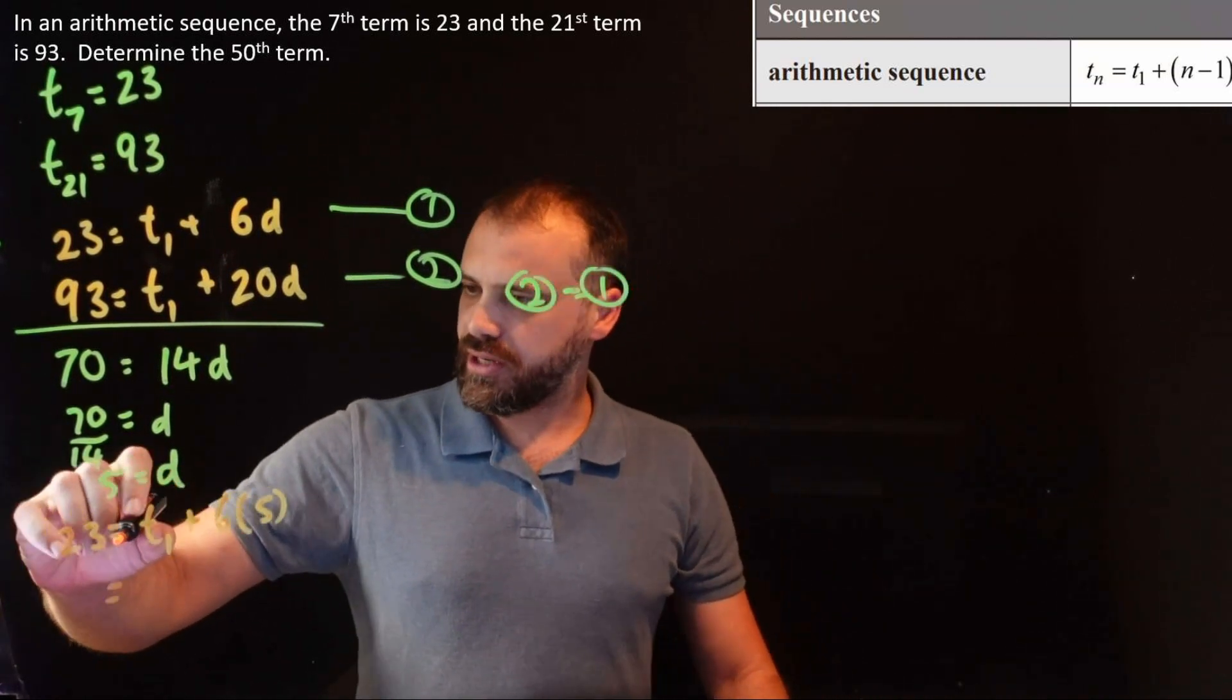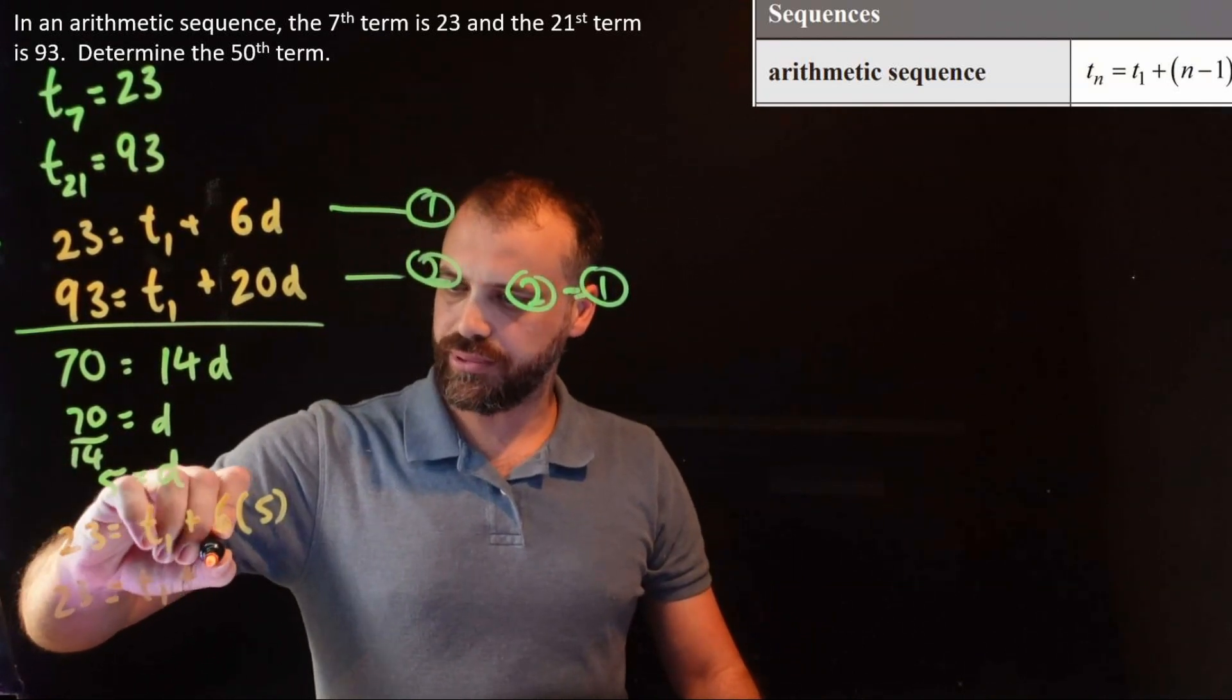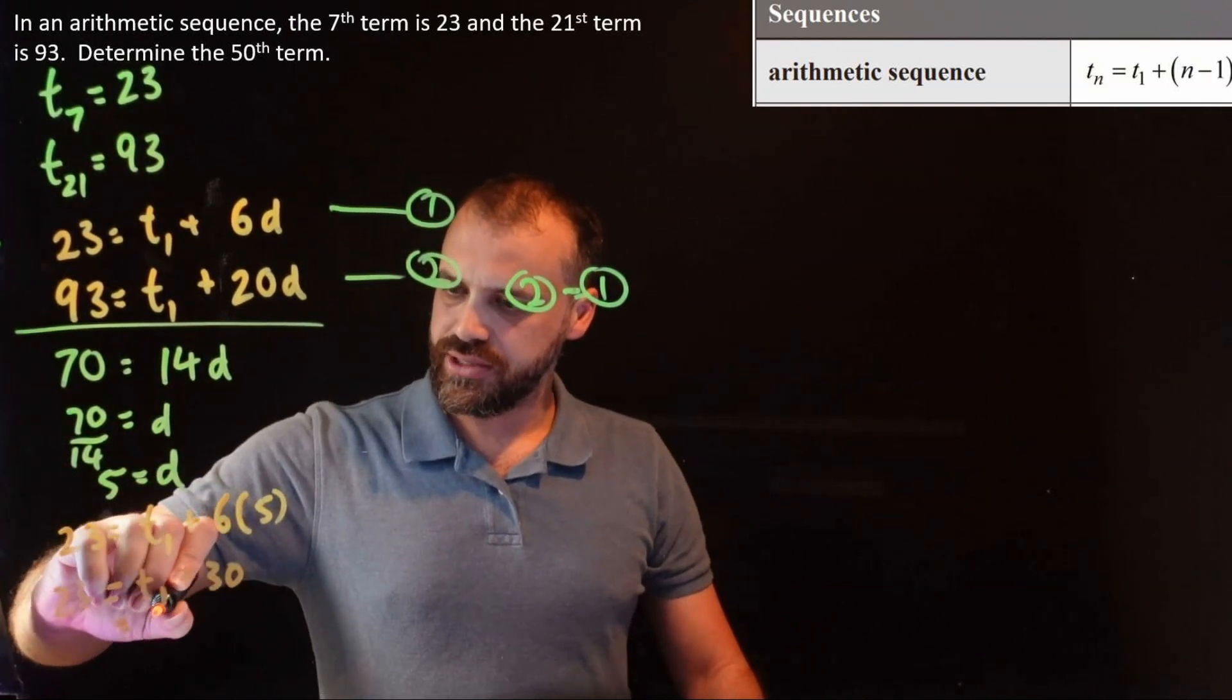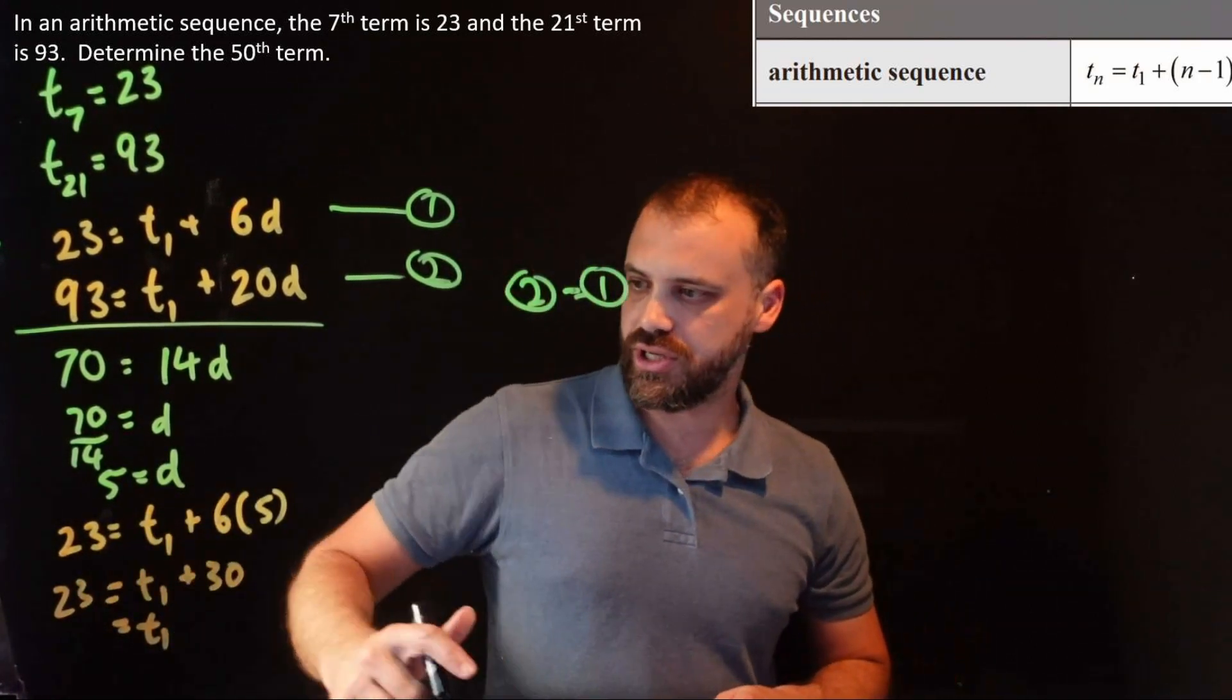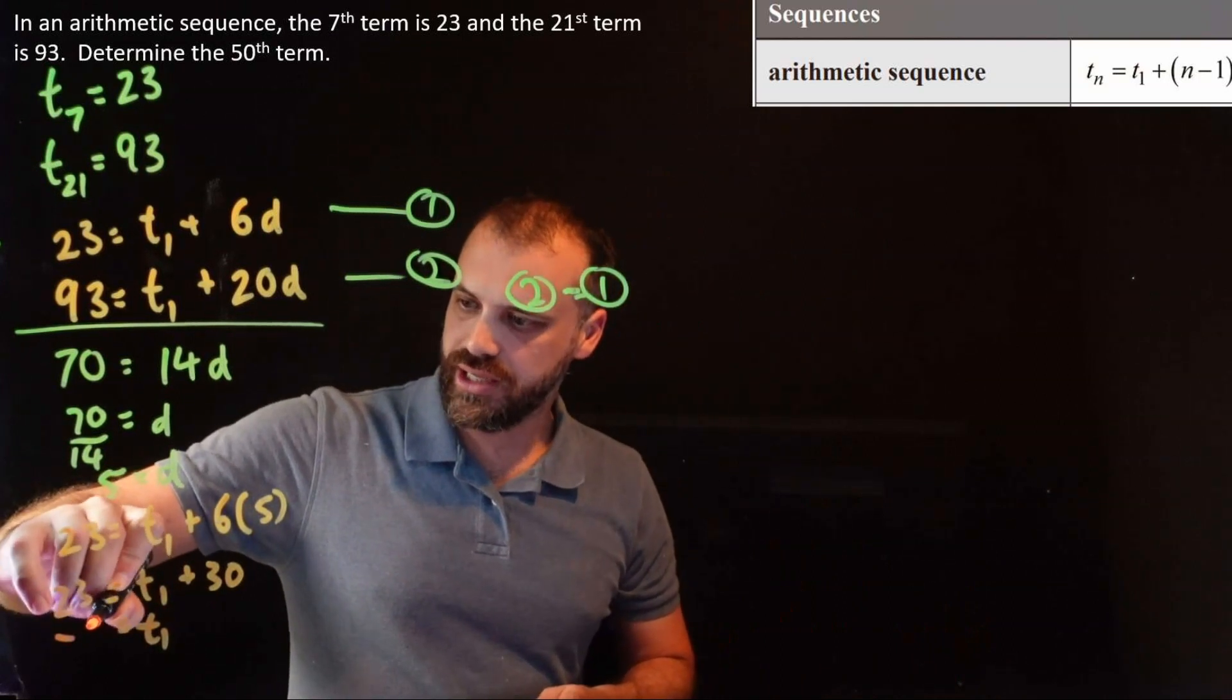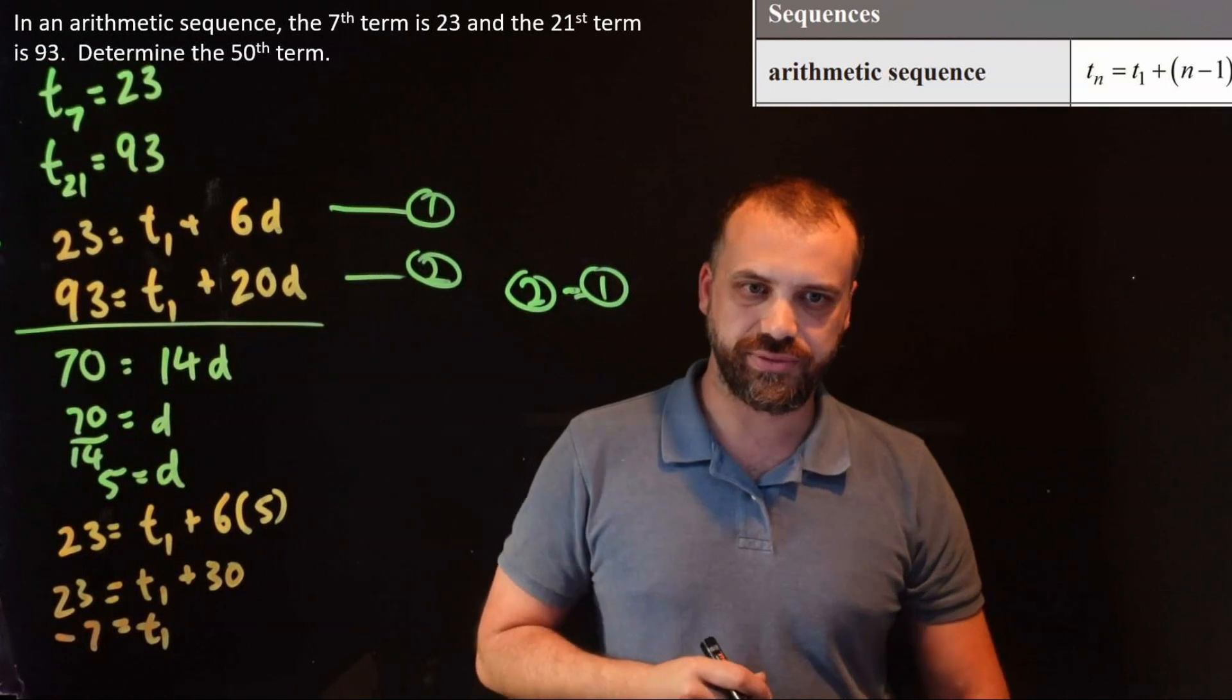Now, I could have also put it into that second equation. It really doesn't matter. One of those will work. So now that I've done that, we have 23 is equal to T1 plus 30. So that means that the first term must be equal to 23 minus 30, which is negative 7. The first term is negative 7.